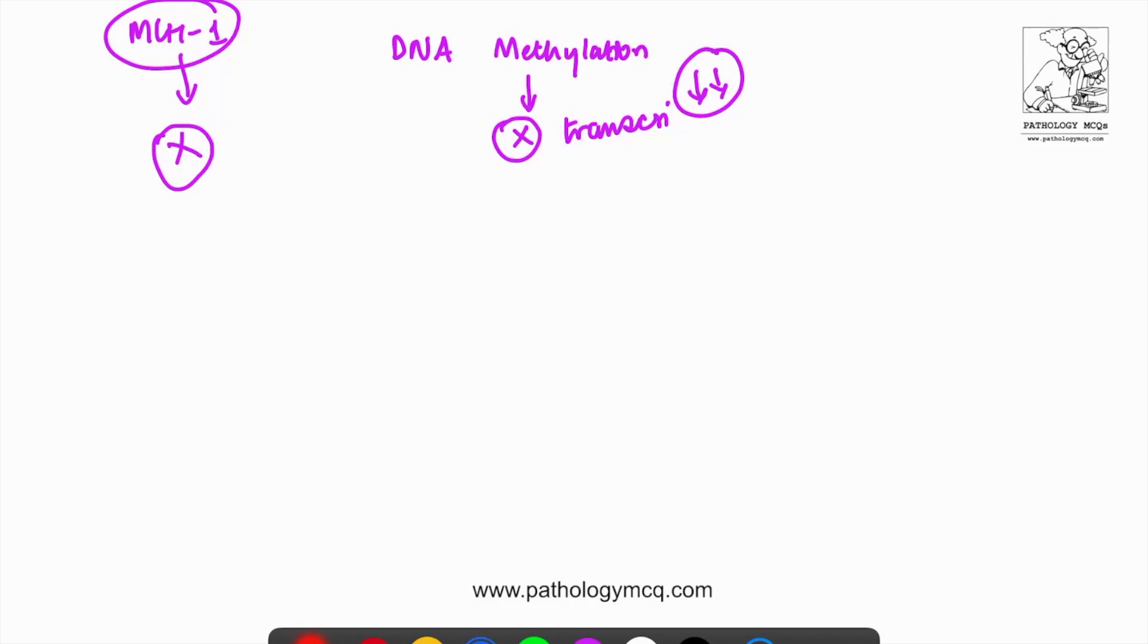So where does this methylation happen? These methylation happen in CpG islands. The significance of CpG islands is CpG islands are usually present in the promoter regions. Promoter region is the initiator region which initiates protein formation. When there is methylation in CpG islands of MLH1, what happens is the promoter hypermethylation is there, which will lead to suppression of the promoter region, which will lead to decreased protein synthesis.